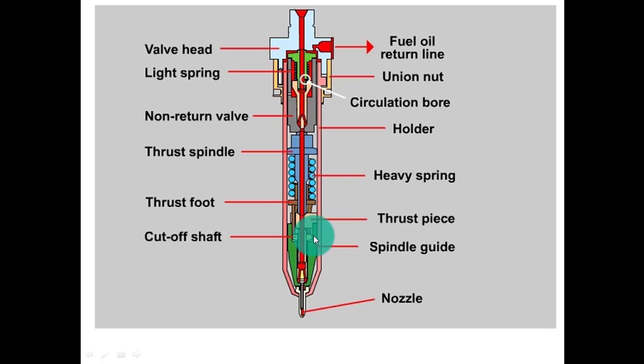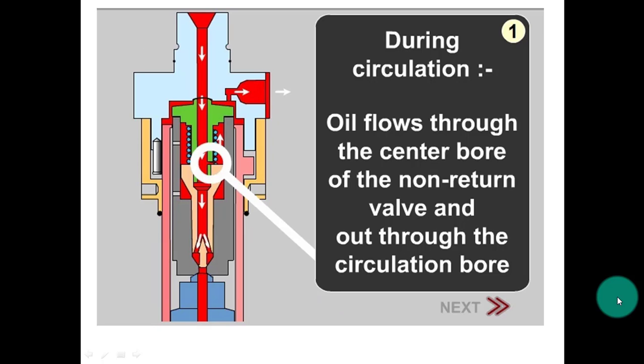This part is the cut-off shaft and this part is the spindle guide and this is the nozzle. During circulation, oil flows through the center bore of the non-return valve and out through the circulation bore.